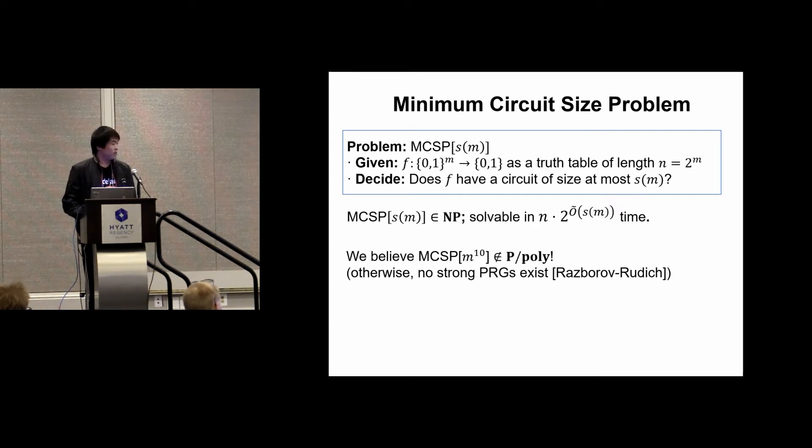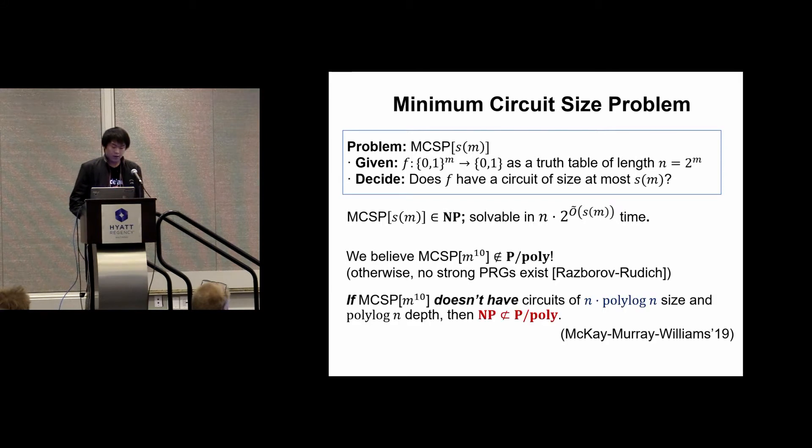This would give us a natural property which could be used to break PRGs. So we believe MCSP m^10 is not in P/poly. However, if we could prove a very weak lower bound on this language, we would have breakthrough results in complexity theory. In a recent work by McKay, Murray, and Williams, it is shown that if MCSP m^10 doesn't have circuits of n times polylog(n) size and polylog(n) depth, then NP is not in P/poly.